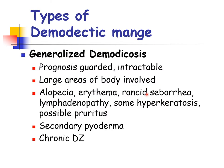The generalized demodicosis has a guarded prognosis, meaning the possible outcome of the disease is unknown. It is also intractable, or difficult to control. Since it is generalized, lesions involve large areas of the body and are characterized by alopecia, erythema, rancid seborrhea, lymphadenopathy, hyperkeratosis, and possible pruritus. There is also secondary pyoderma, and this disease is considered to be chronic.